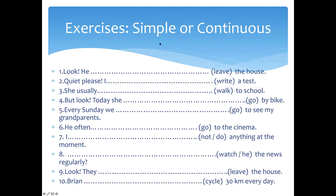Here are some exercises to practice simple or continuous tense. Here are some sentences with a verb in brackets. You have to use it either in the simple tense or in the continuous tense. For example, in the first sentence: 'Look, he leaves the house.' What tense should be used here? This is continuous: 'Look, he's leaving the house.' The hint is the word 'look' — it means the action is happening now and is not yet completed.